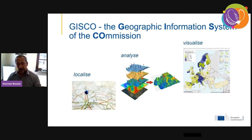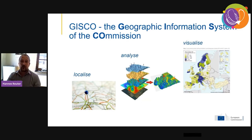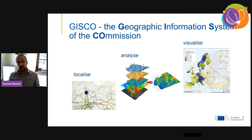GISCO stands for Geographic Information Systems of the Commission — the Commission is known for its acronyms. It's also sometimes read as Geographic Information System Coordination, which is part of our role as we coordinate GIS inside the Commission. We do the full workflow: analyzing, localizing, and visualizing geographic information. We get data from member states, commercial sources, and OpenStreetMap, analyze it — making travel time distance matrices or polygons — and visualize it, providing tools like what you see here in a screenshot from our image tool.